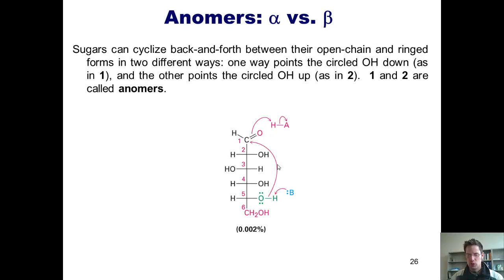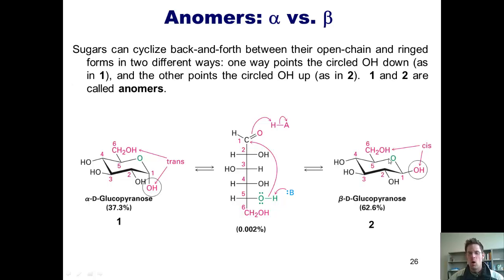As I already discussed two slides ago, sugars can cyclize back and forth between their open chain and ring forms in two different ways. One is by putting the OH going down. If this oxygen closes on the anomeric carbon in a way that points the OH going down, we get one form. And the other is pointing the OH up. These two rings, one and two, are called anomers of each other.